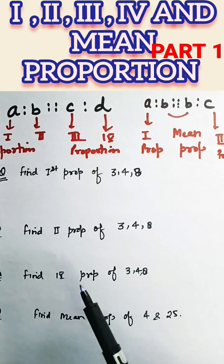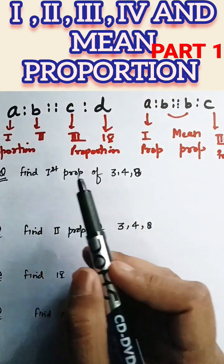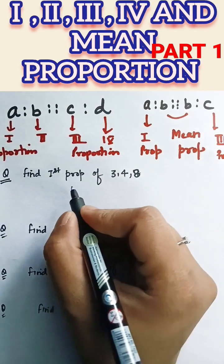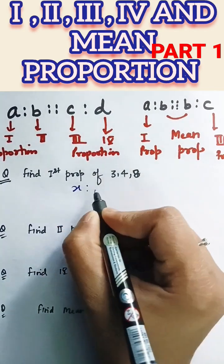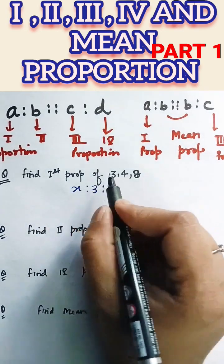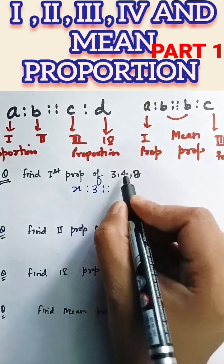So how we find out first, second, third, fourth proportion. In order to find first proportion of three numbers, first proportion means that the first number is missing, so we can write the first number as X. So X ratio 3 proportion C ratio D, that means A means X, B, C, D.